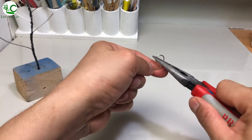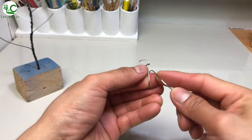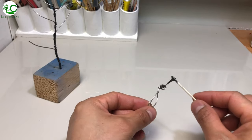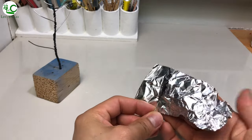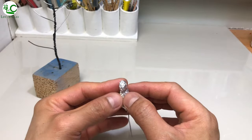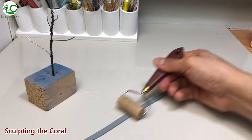Next, for the seahorse armature, I just fashioned this wire into a hook and made some loops to form the basic structure. And after that, applying 2-part epoxy on it and cover it with aluminum foil. And we can now start sculpting the coral.